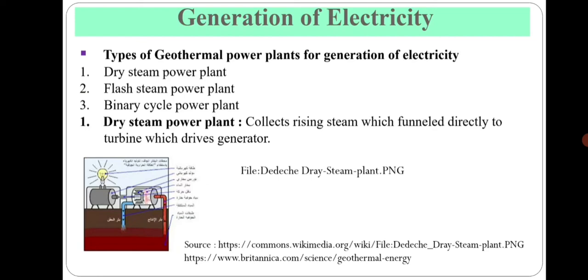First is the dry steam power plant. This plant utilizes dry steam, meaning water vapor. It extracts steam at around 150 degrees Celsius. It collects rising steam which is funneled directly to a turbine that drives the generator, giving us electricity. In the image we can see the rising steam pipe feeding into the turbine, which then drives the generator to produce electricity.